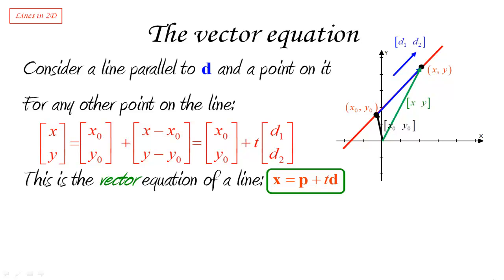Notice that I can choose the vector d as I wish, as long as it's parallel to the line. So, in particular, I can choose d to be a vector which is obtained directly from a normal vector. So, if I'm given a normal vector n1, n2, I can construct the direction vector as minus n2, n1.